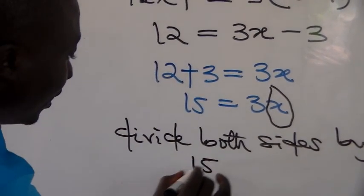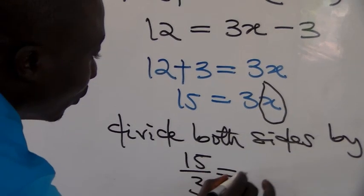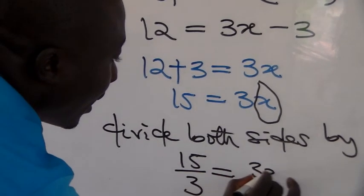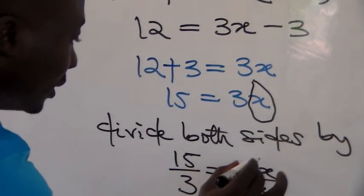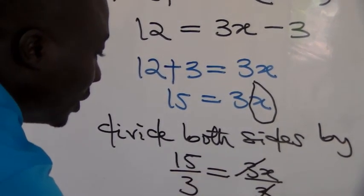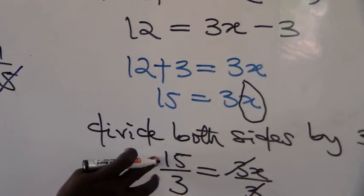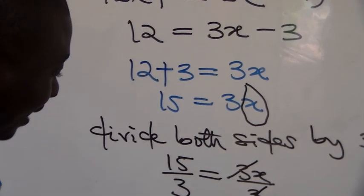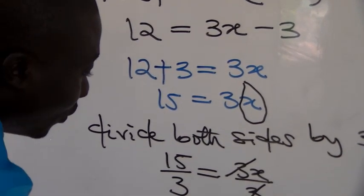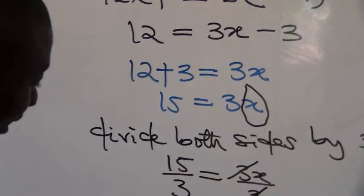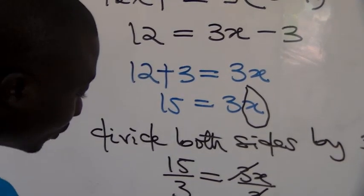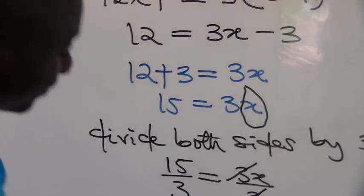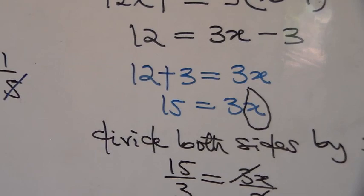We have 15 over 3 equal to 3x over 3. How many times does 3 go into 15? It goes 5 times. So x is equal to 5. That's all about the first topic.